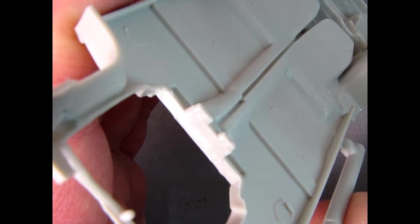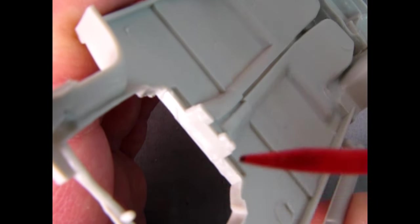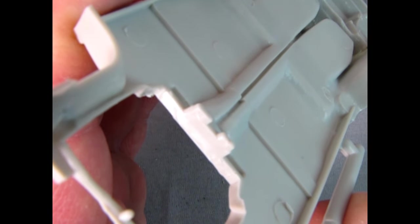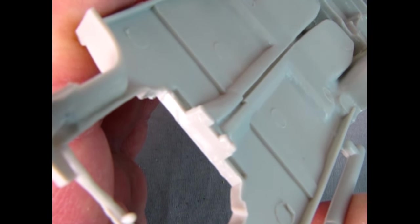Where the transmission mounts to the chassis you can see a mold mark on the top of this block arrangement. You will have to file this area flat to match the rest of the mounting block.